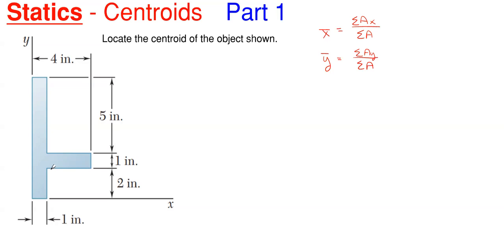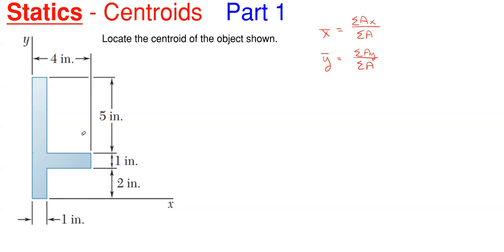There are multiple ways that you can split this up. For instance, I could split it with one rectangle here, a second rectangle here, and then a third rectangle as the vertical portion, giving me three shapes. But you want to make it the least amount of shapes as possible. So I'm going to split it into one vertical piece — shape one — and one horizontal piece — shape two.